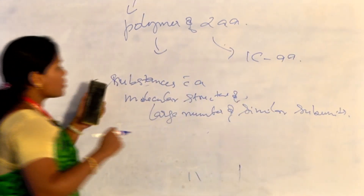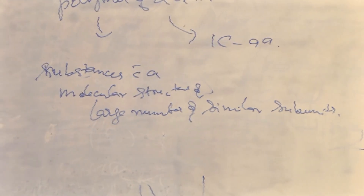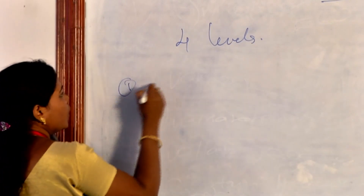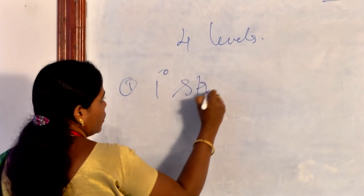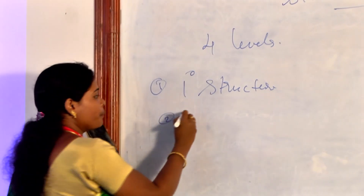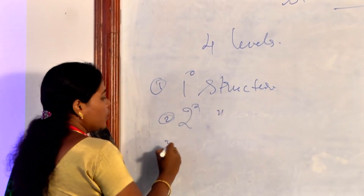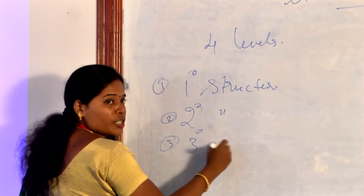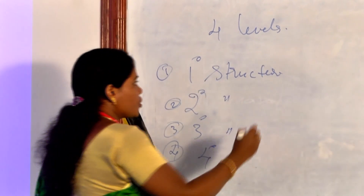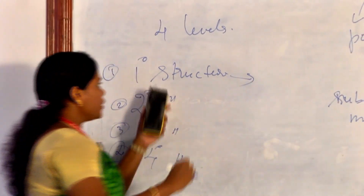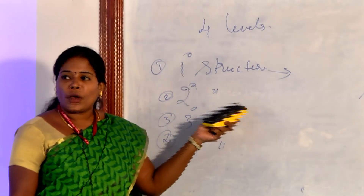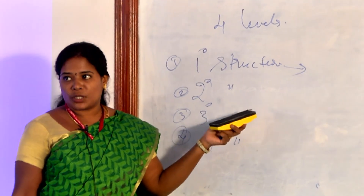Protein has four levels of structure. The first is primary structure, the second is secondary structure, the third is tertiary structure, and the fourth is quaternary structure. The primary structure is the linear arrangement of the protein and it acts as the backbone of the protein.